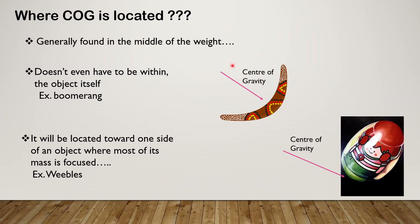Next, where is the center of gravity located? For any object it is generally found in the middle of the weight. It does not even have to be within the object itself. For example, if we take a dumbbell, it will be located toward one side of an object where most of its mass is focused.